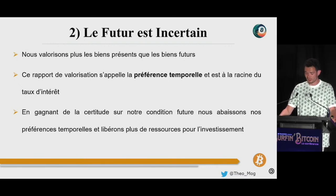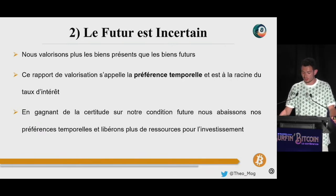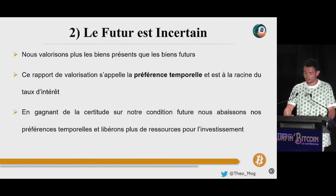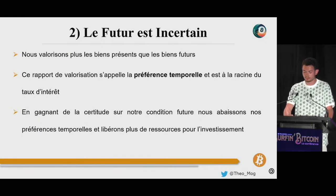Dans un avenir qui serait parfaitement prévisible, les individus pourraient organiser toutes leurs entrées financières futures pour acheter directement les biens qu'ils désiraient au moment où ils en auraient besoin et n'auraient donc pas besoin de détenir de monnaie. Mais dans le monde réel, où l'avenir est imprévisible, la monnaie est le meilleur outil pour sécuriser le futur car sa liquidité lui permet d'être convertie en n'importe quel bien désiré à l'avenir. En utilisant des biens comme monnaie, les individus augmentent la certitude sur le futur et abaissent leurs préférences temporelles.